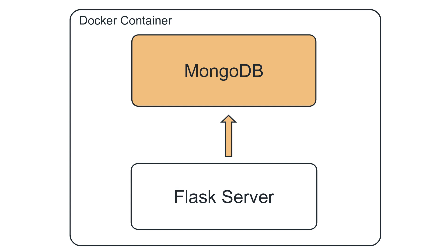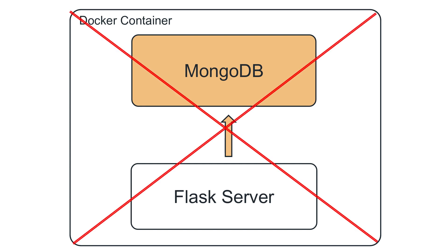But in my opinion, this is not good architecture. If for some reason a Docker container crashes, you will lose both MongoDB and the Flask application. The frontend applications accessing Flask routes — even those not related to the database — will not be accessible. And other Flask servers accessing MongoDB will also be lost.